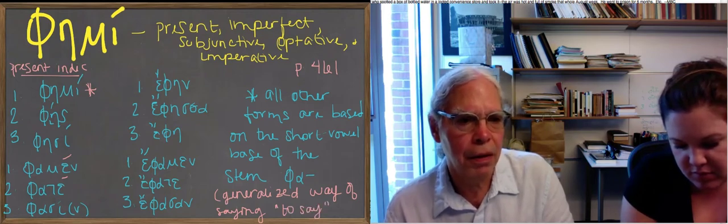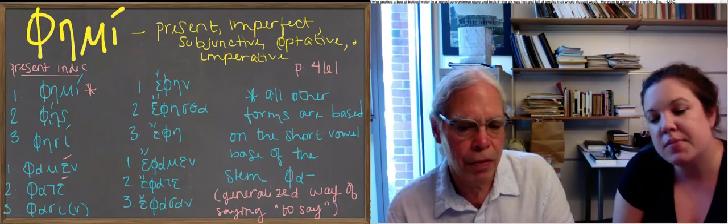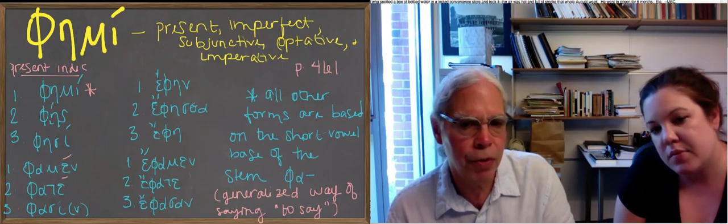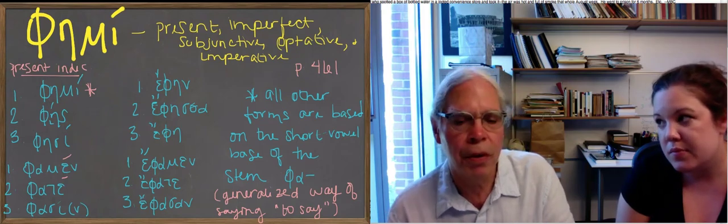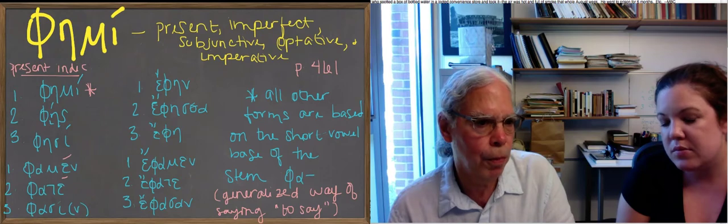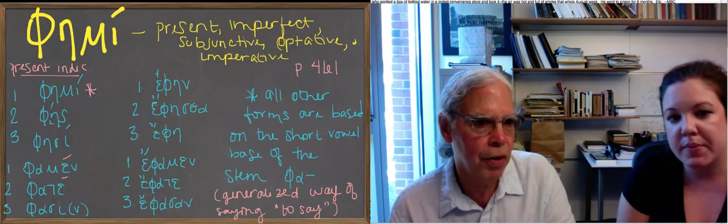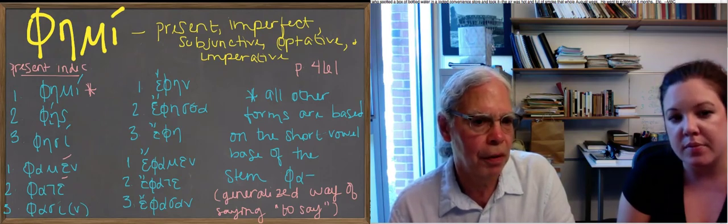So this is the old inherited word for say. This word shows many of the characteristics that we've seen for the athematic verbs like histemi, tithemi, and didomi. One thing that this word doesn't have is reduplication in its system.